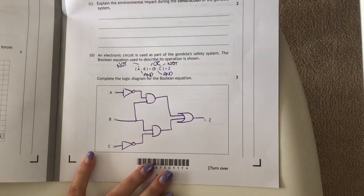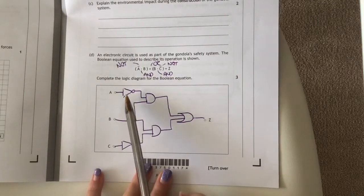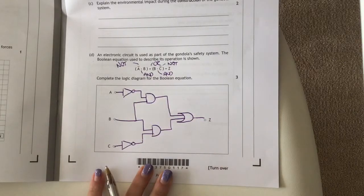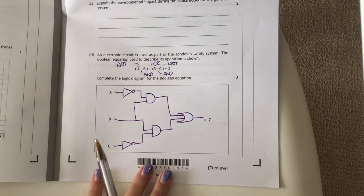Now for three marks you'll get a mark for having your two NOT gates in the correct place, your two AND gates in the correct place, and your OR gate.